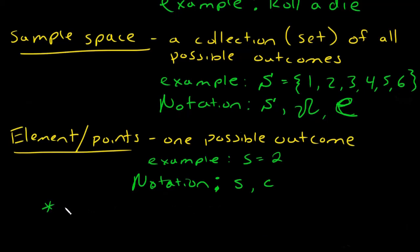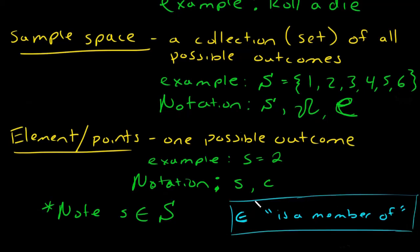One thing I want to point out is we need to note that this s, this element, is a member of the sample space. So I can't roll a seven, right? It needs to be a member of the sample space. Just as a reminder, this symbol means is a member of. And you're going to see this mathematical shorthand quite a lot in probability theory, so you need to keep these in mind.